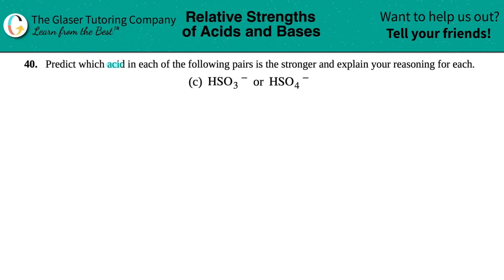Number 40, predict which acid in each of the following pairs is the stronger and explain your reasoning for each. And then we have letter C out of the bunch. So we have to figure out whether HSO3 minus or HSO4 minus is the stronger acid.